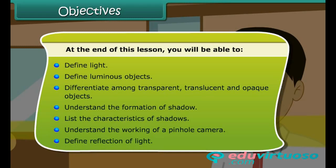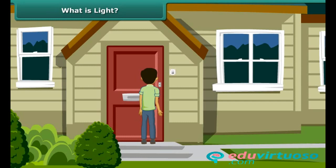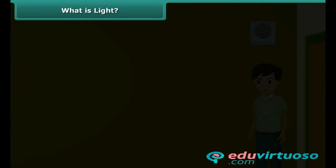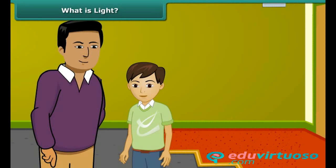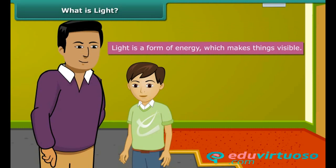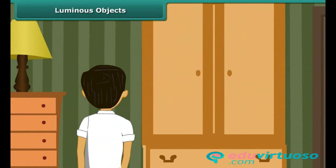It's night and you step inside the house. There is darkness all around and everything appears black. You can hardly see anything. Your father switches the light on and now you can see everything clearly. This means light enables viewing. Therefore, light is defined as a form of energy which makes things visible.